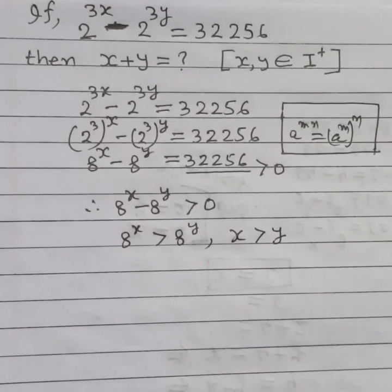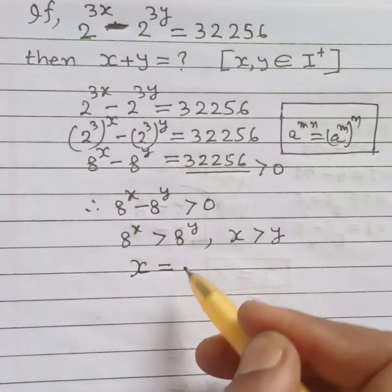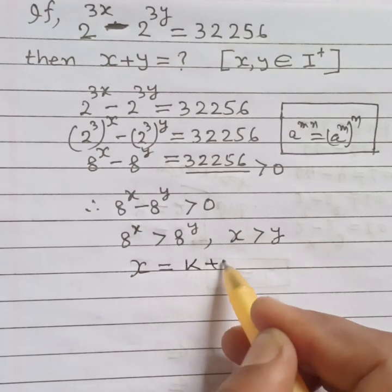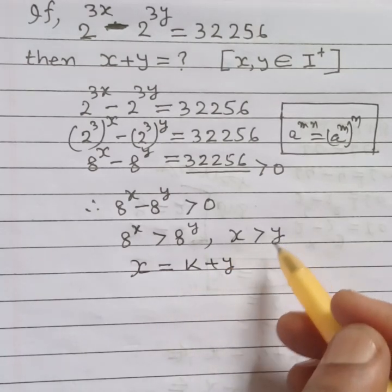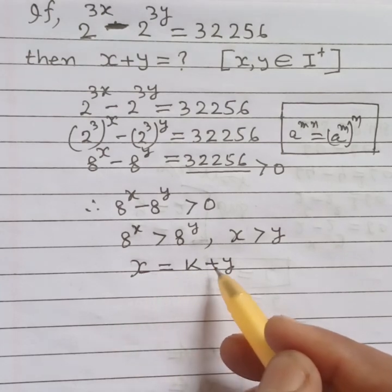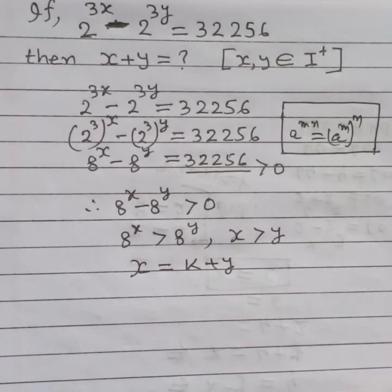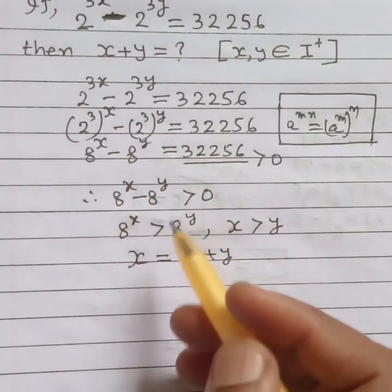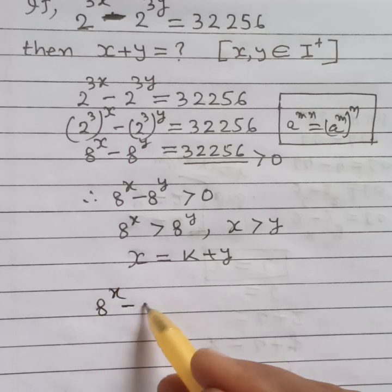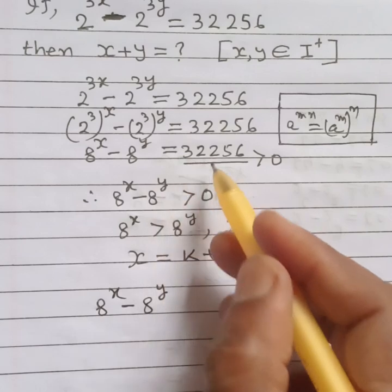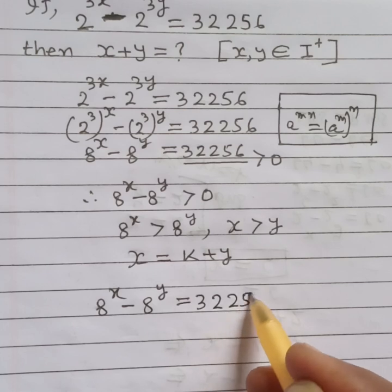Since x is greater than y, we can write x equals k plus y, where k is any positive number. Our equation is then 8 to the power x minus 8 to the power y equals 32256.